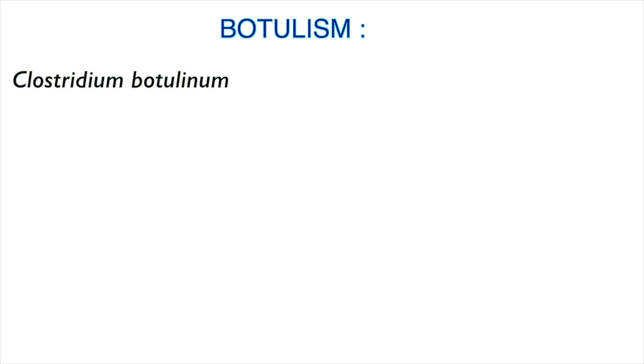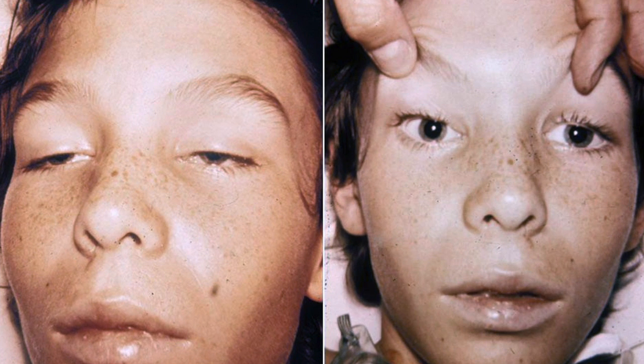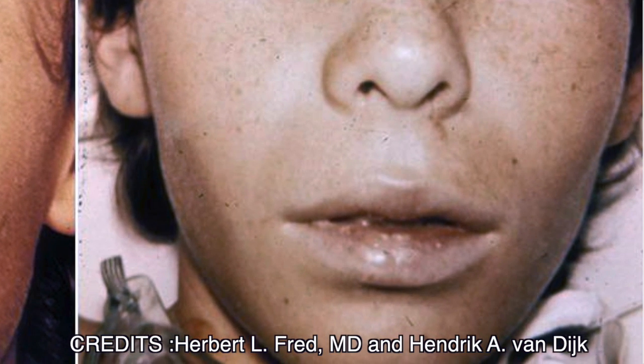Now we'll see different diseases caused by these exotoxins secreted by pathogenic bacteria. First, one of the most lethal diseases called botulism, caused by bacterium Clostridium botulinum. This bacterium secretes AB exotoxin named botulinum toxin. This being a neurotoxin prevents the transmission of nerve synapses. You can see in this picture a patient suffering from botulism.